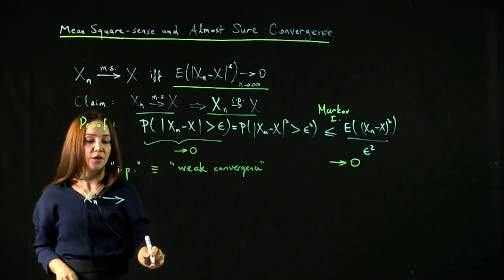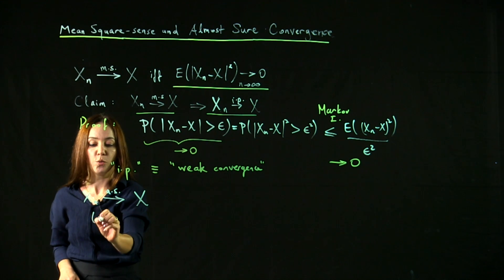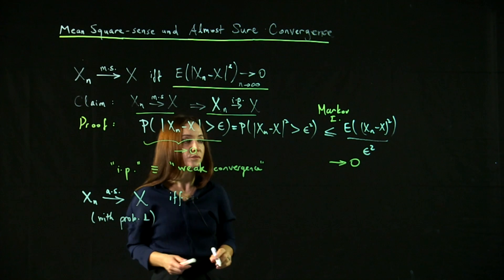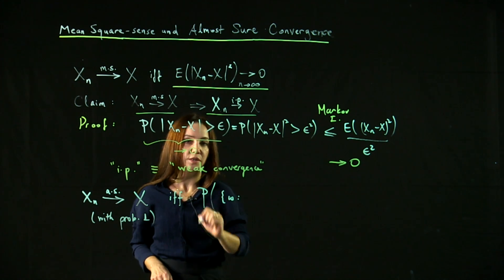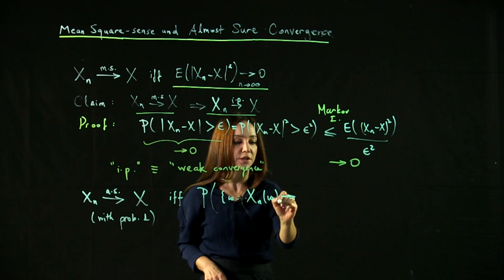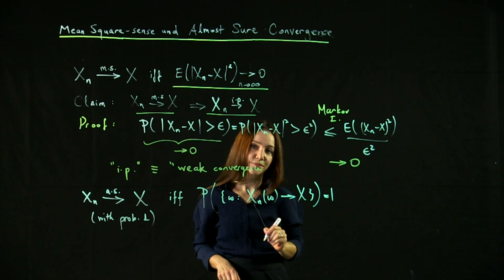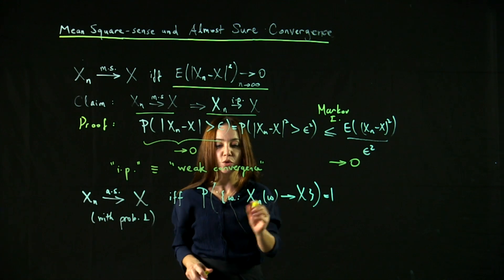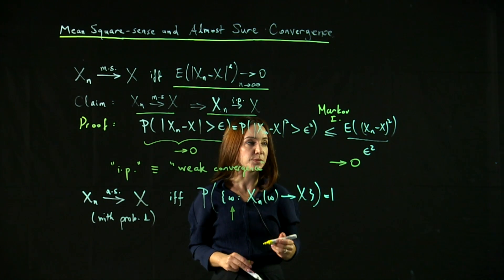Xn converges to the random variable x almost surely or with probability one if and only if the probability of the realizations or outcomes w for which the sequence xn converges to x is one. So this is maybe a little harder to understand because it requires going back to the sample space and associating probabilities with outcomes.